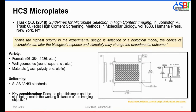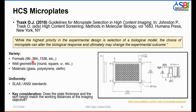Regarding HCS microplates, I refer the audience to the review from Trask et al. 2018, Guidelines for Microplate Selection and High-Content Imaging. The formats most commonly used in HCS assays to date have been either 96 or 384 well formats.